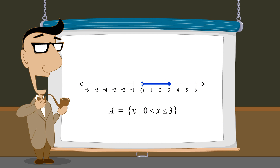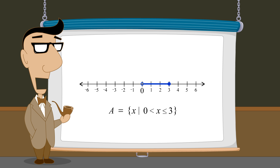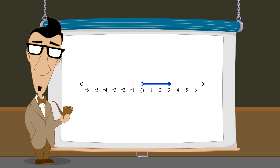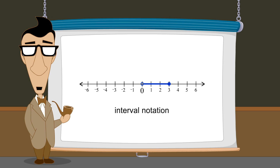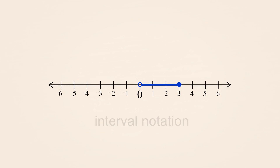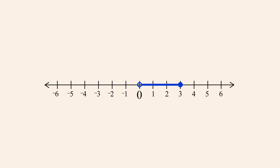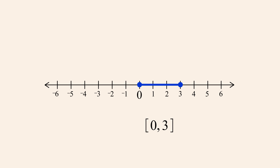It is not always necessary to use set builder notation when defining numeric sets. Another notation, called interval notation, is often an easier and more compact way to define numeric sets. As an example, let's use interval notation to define a closed interval whose endpoints are zero and three. Using interval notation, we simply write the two endpoints separated by a comma and enclosed in square brackets.